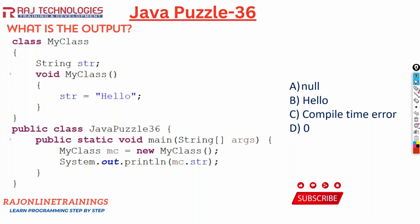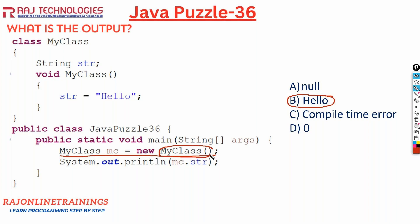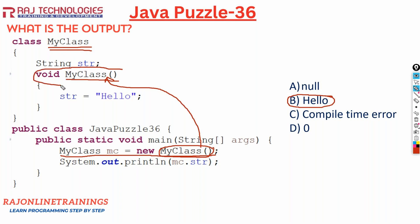For this puzzle, maximum people will choose option B - hello. The reason is when you are creating an object of MyClass, this looks like a constructor - a method whose name is same as the class name. In Java we create objects using constructors, so we think the control will go to this myClass method, assign the value hello to str, and when printing mc.str it will display hello. So many people will go with option B.